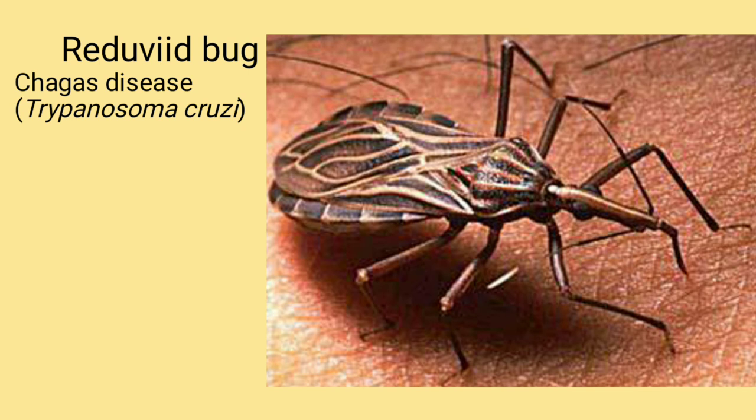Identify the insect: This is reduviid bug. It transmits Chagas disease, caused by Trypanosoma cruzi. Remember: C for Chagas disease and C for cruzi.